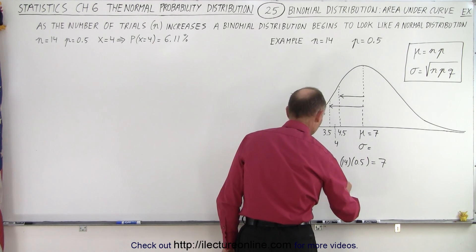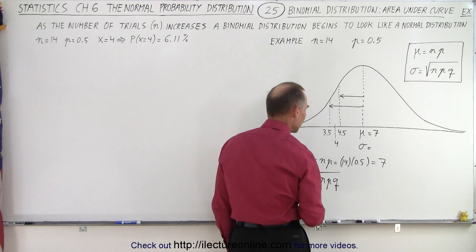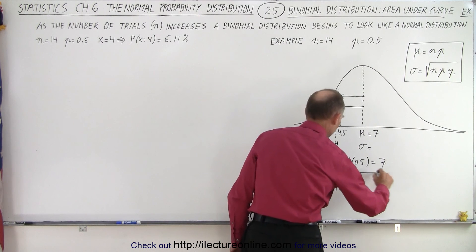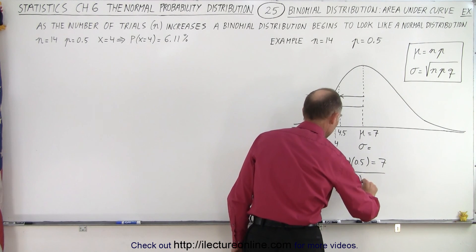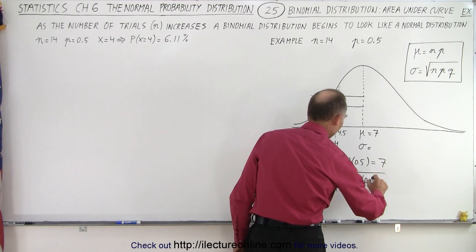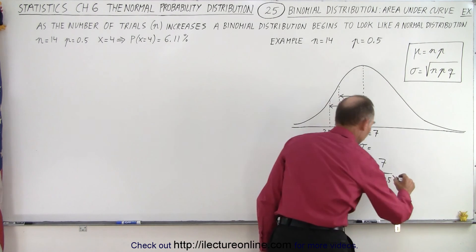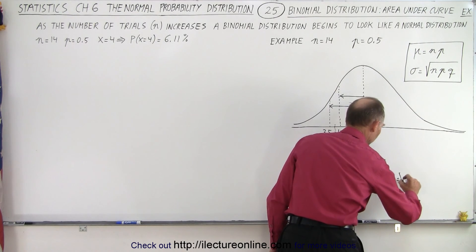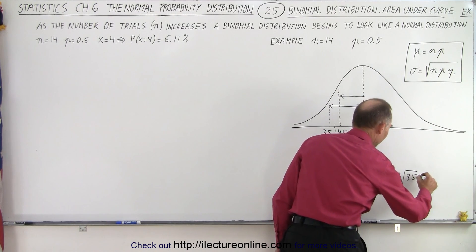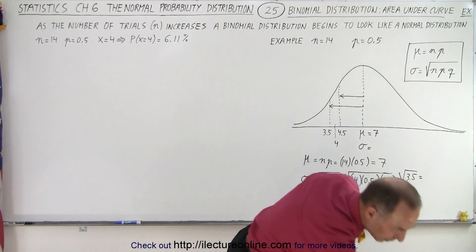So it's the square root of 14 times 0.5 times 0.5, so that would be equal to the square root of 3.5. So let's find out what that is equal to.